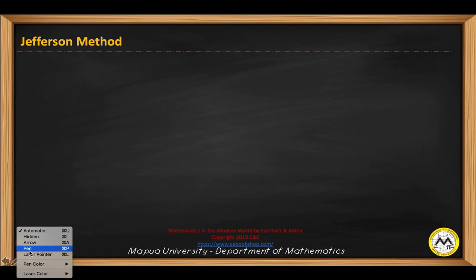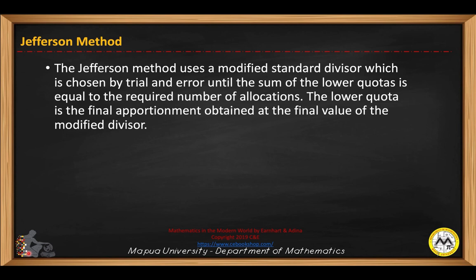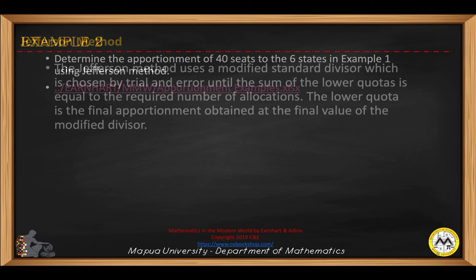Now let's see the second method, the Jefferson method. The Jefferson method uses a modified standard divisor, which is chosen by trial and error, until the sum of the lower quotas is equal to the required number of allocations. The lower quota is the final apportionment obtained at the final value of the modified divisor.